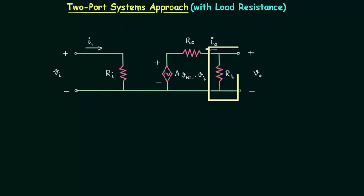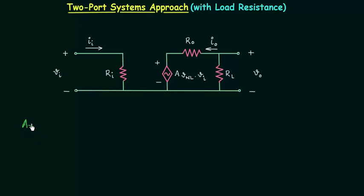We will connect the load resistance between the output terminals and first we will find out the output voltage Vo, because in calculation of loaded voltage gain we need the output voltage Vo. The loaded voltage gain is equal to the ratio of output voltage to the input voltage, and as you can see we have load resistance connected in this circuit.